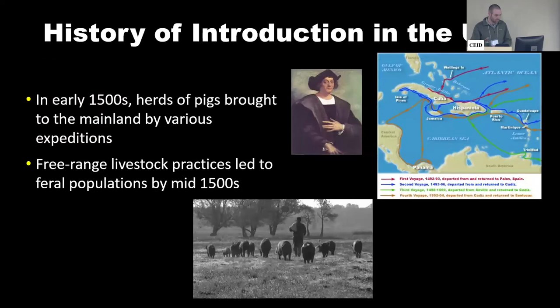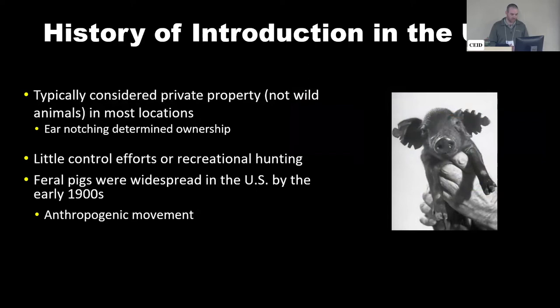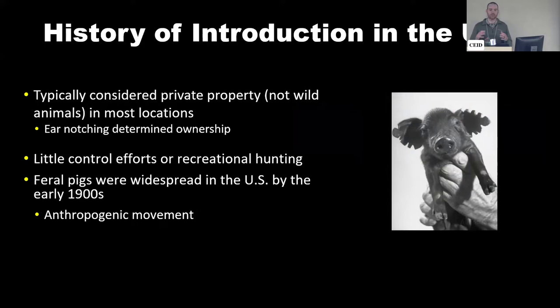Specifically here in the United States, colonial expeditions starting with Christopher Columbus and subsequent expeditions brought domestic swine and treated them as free-range livestock. There were no enclosures; they were somewhat kept and taken as needed, fairly free-ranging and treated as private property. Ear notching was a common technique to distinguish ownership, but there was no control, no regulation. These feral swine were in little pockets across the United States, and by the early 1900s they were fairly widespread throughout America.